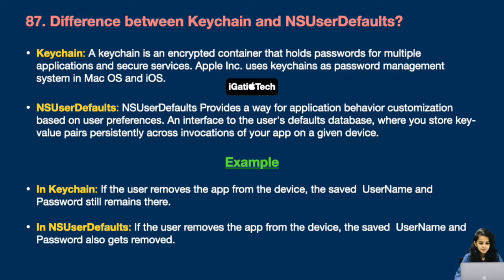Question number 87: Difference between Keychain and UserDefaults. A Keychain is an encrypted container that holds passwords for multiple applications and secure services. Apple uses Keychains as a password management system in macOS and iOS. NSUserDefaults provides a way for application behavior customization based on user preferences — an interface to the user's default database for storing key-value pairs persistently. For example, if the user removes the app from the device, Keychain data like username and password still remains, whereas UserDefaults data gets removed.